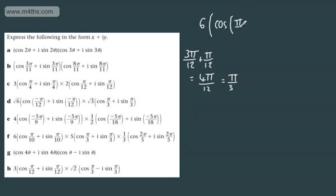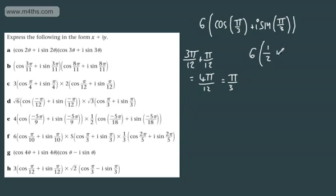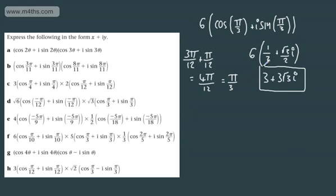We can write 6 times cosine of pi by 3 plus i sine of pi by 3 in the form x plus iy. The cosine of pi by 3 is 1 half, and the sine of pi by 3 is root 3 over 2. So we can write this as 3 plus 3 root 3i.